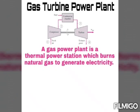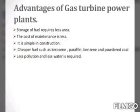The gas turbine has three main components: one, air compressor; second, combustion chamber or combustor; and third, turbine. The power developed by the turbine is used to drive the compressor.